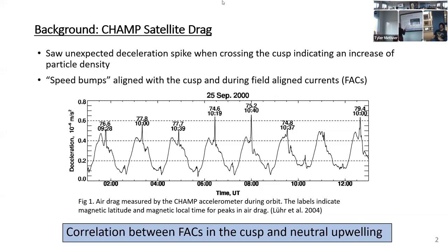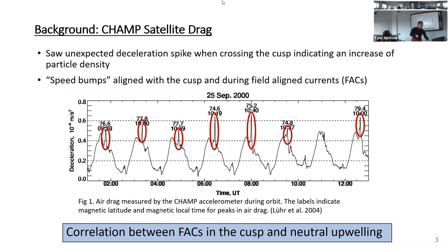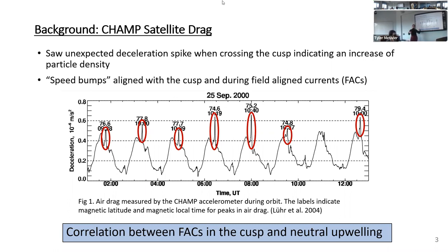Some of you might have seen this plot already, but this is specifically a plot from the CHAMP satellite in its orbit and how its deceleration changed over time. This deceleration is correlated to air drag, and you can see it typically follows a pretty common pattern as it goes through the atmosphere. But what's really important to note is that almost every time it reached this peak, there were giant spikes in drag that were not expected. This also happened when it crossed into the cusp region, meaning there was a large increase in air drag when it crossed the cusp.